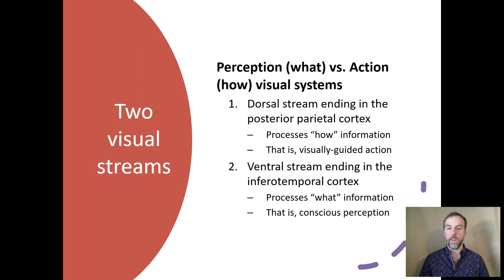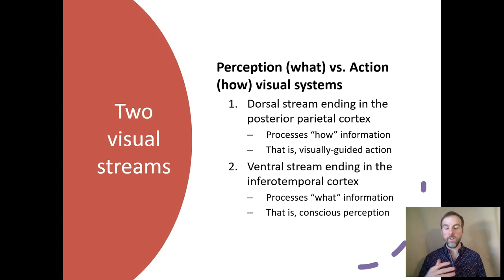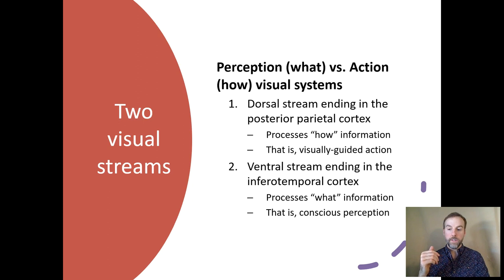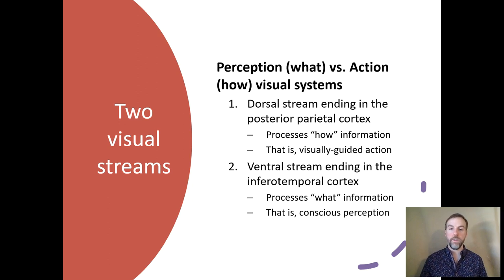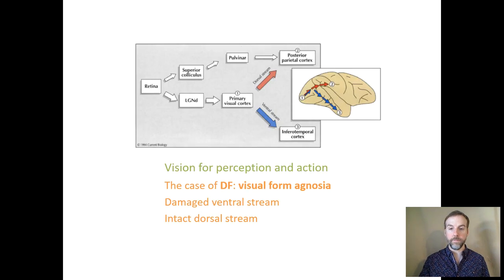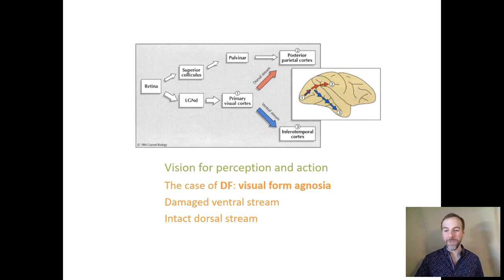Milner and Goodale had two very special individuals with damage. One had damage to their dorsal stream and lost the ability to do how functions, although they could do all sorts of what functions. The other had the exact opposite: damage to their ventral stream, unable to make conscious perceptions, but performing visually guided action just fine. We know them simply as DF and RV.